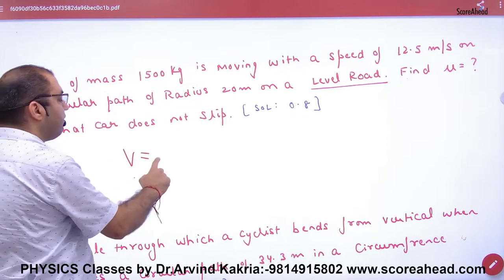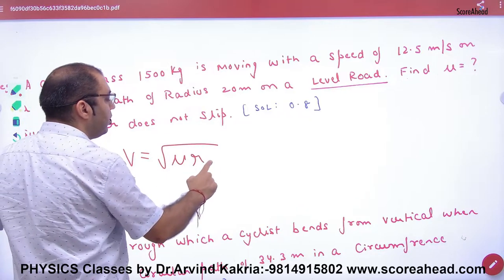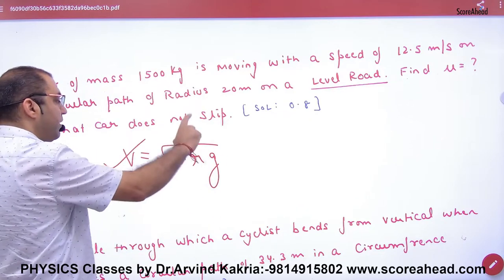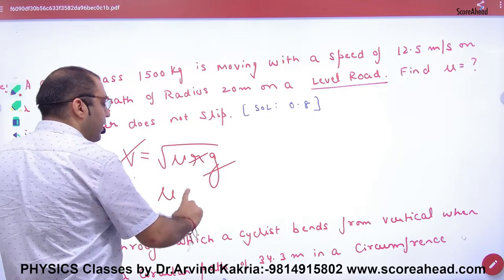So, what will we apply to the level road? V is equal to under root of mu rg. You know v, r and g. What will we solve for? Mu.